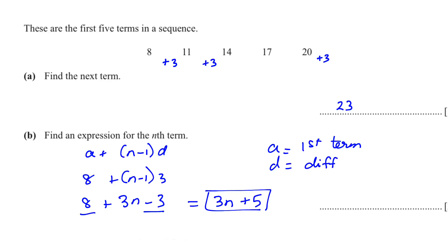There is a shorter way to solve this for an arithmetic sequence. First, identify the difference — we know it is 3, so write 3n. Then subtract the difference from the first term: 8 minus 3 equals 5, giving 3n + 5. You can use this shorter method as well.